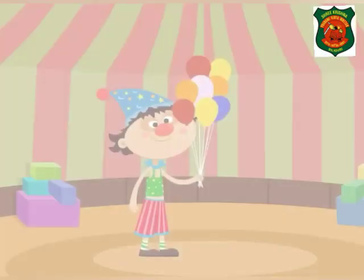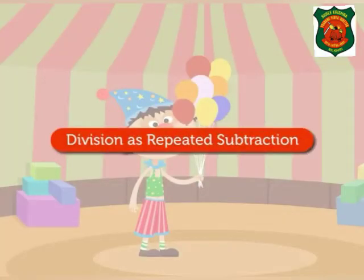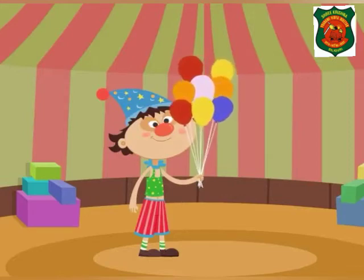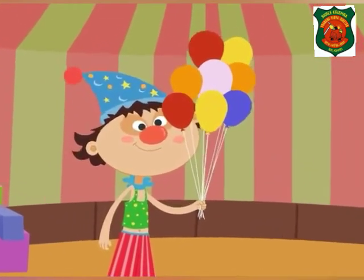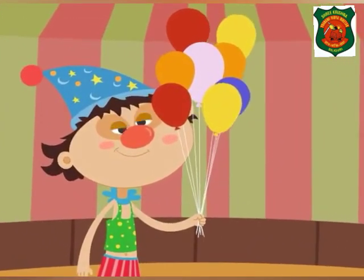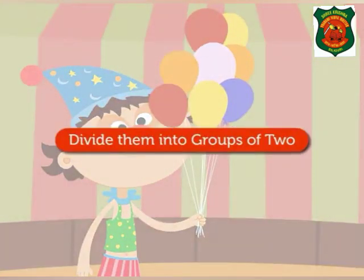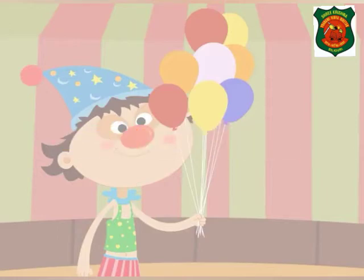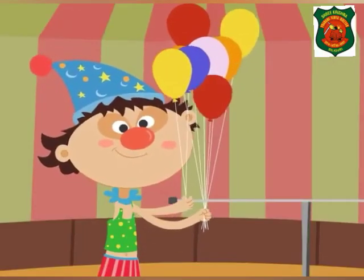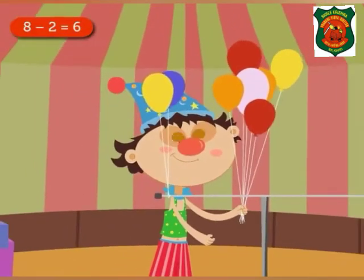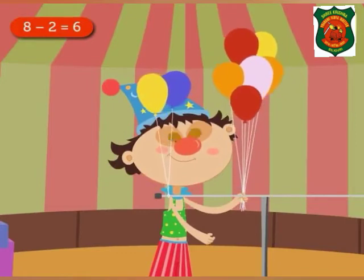Did you know? Division is actually repeated subtraction. Let us see with Jojo the clown. Students, look — Jojo has eight colorful balloons in his hand. Jojo has to divide them into groups of two. Therefore, he ties two balloons from eight. Now he is left with six balloons in his hand.